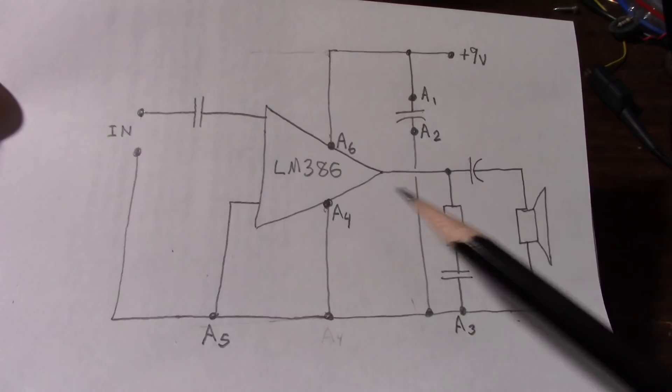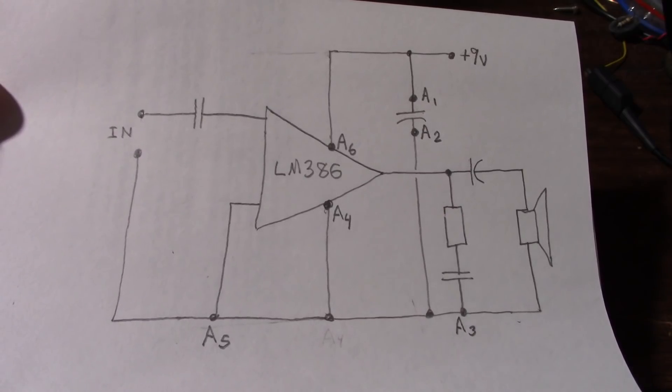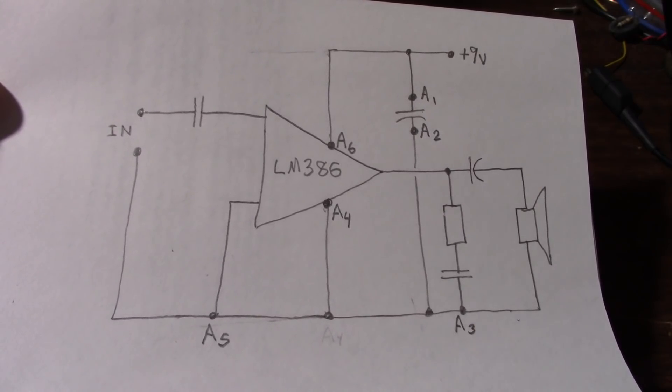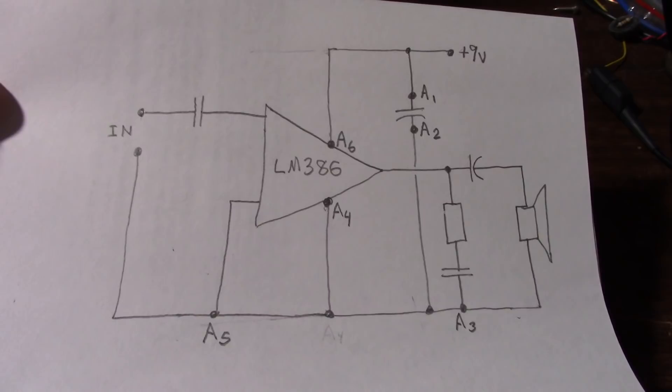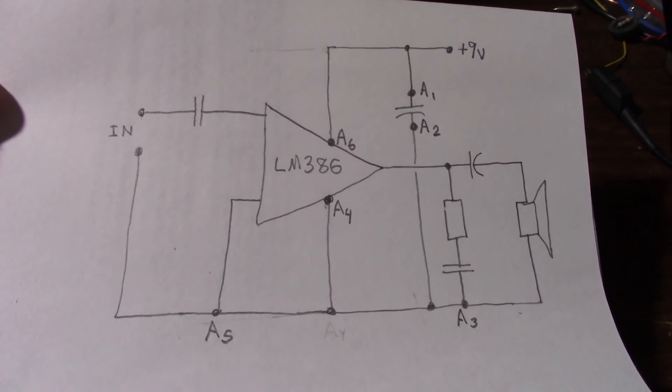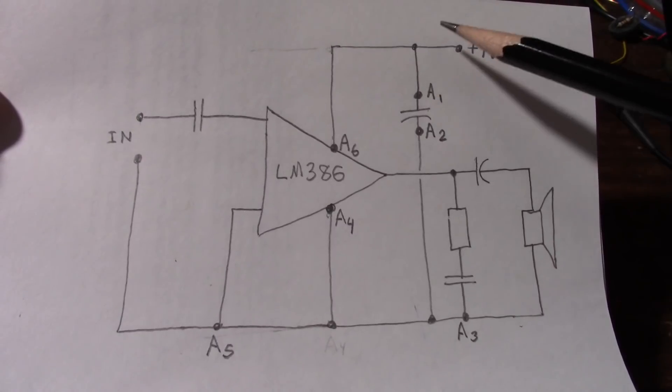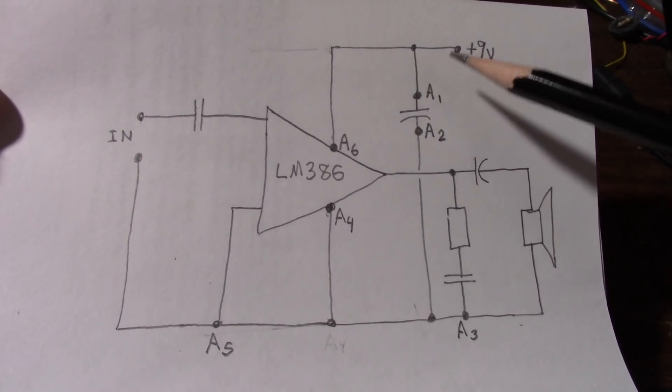So if you're having a distortion issue, a lot of people don't know to scope across the rails. But if they do know, are they scoping across the rails in the correct positions? You might say, well, yeah, I scoped across the supply bypass capacitor.